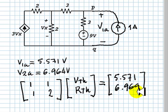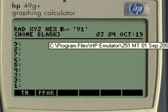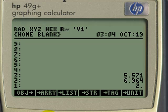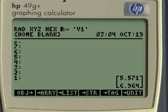We solve that system. We enter this vector, let's say 5.571, enter, 6.964, enter, 2 elements, and we make an array with that. That is a vector of unknowns.